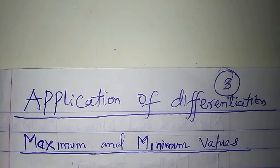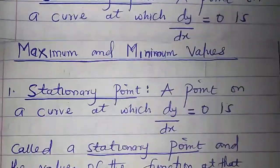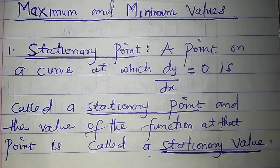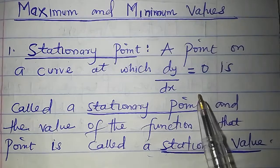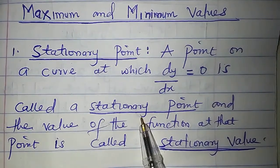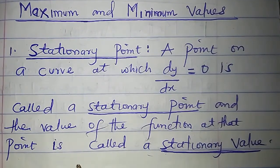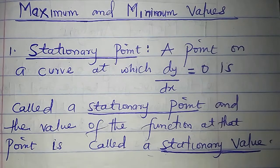Still on the application of differential calculus, this time around we'll talk about maximum and minimum values and maximum and minimum points. Let's start by talking about stationary points. A point on a curve at which dy/dx is zero is called a stationary point or a turning point, and the value of the function at that point is called a stationary value.